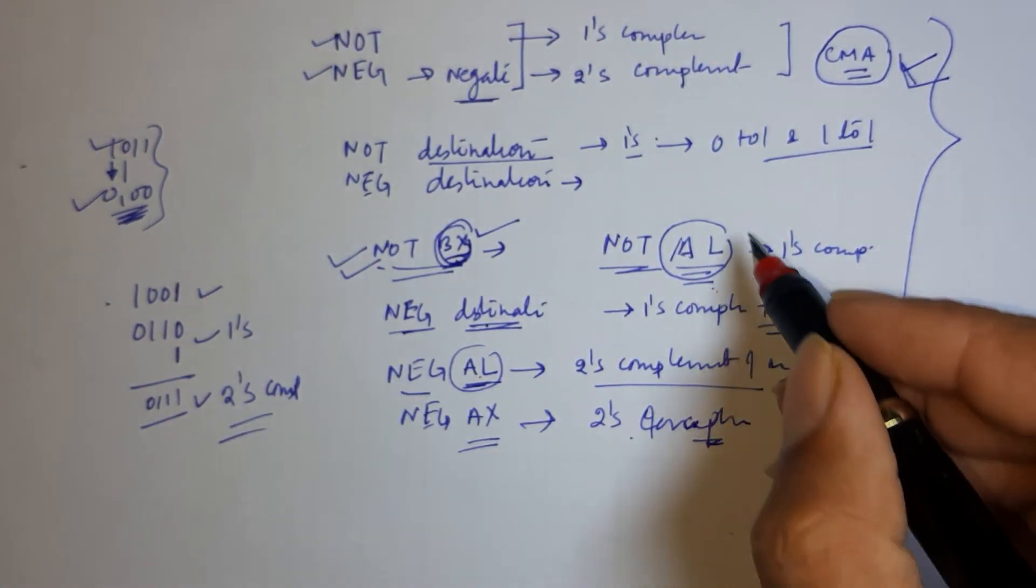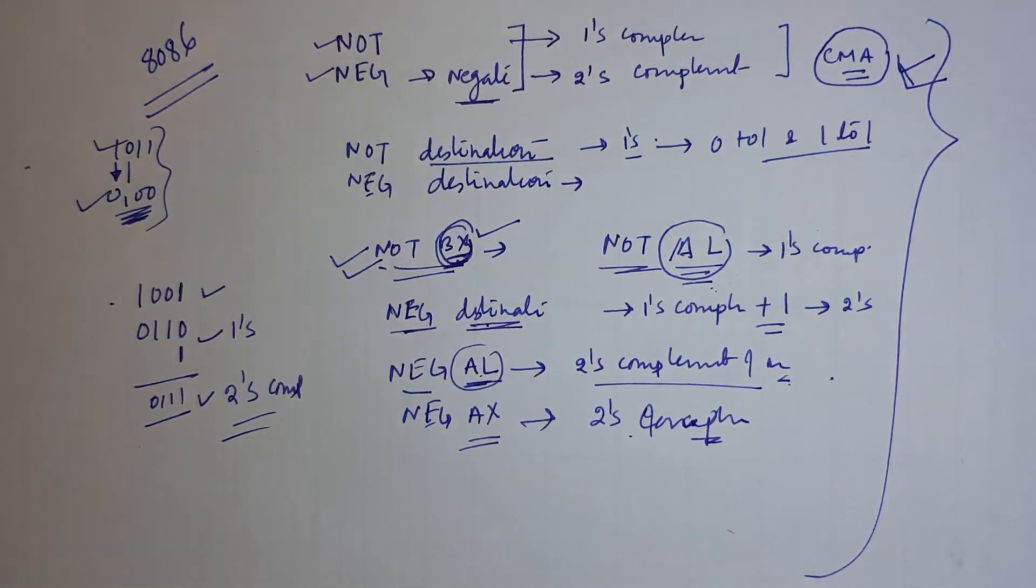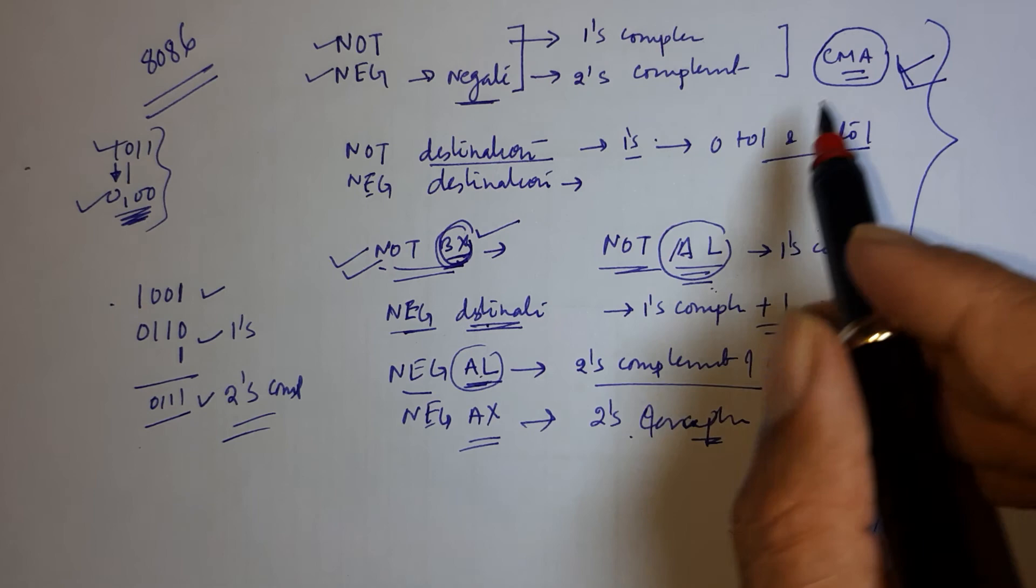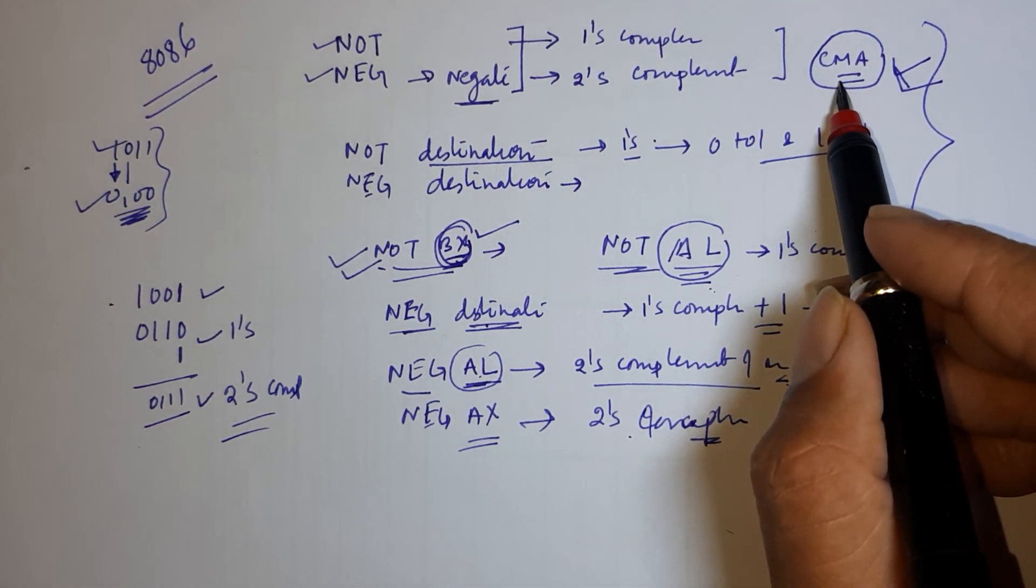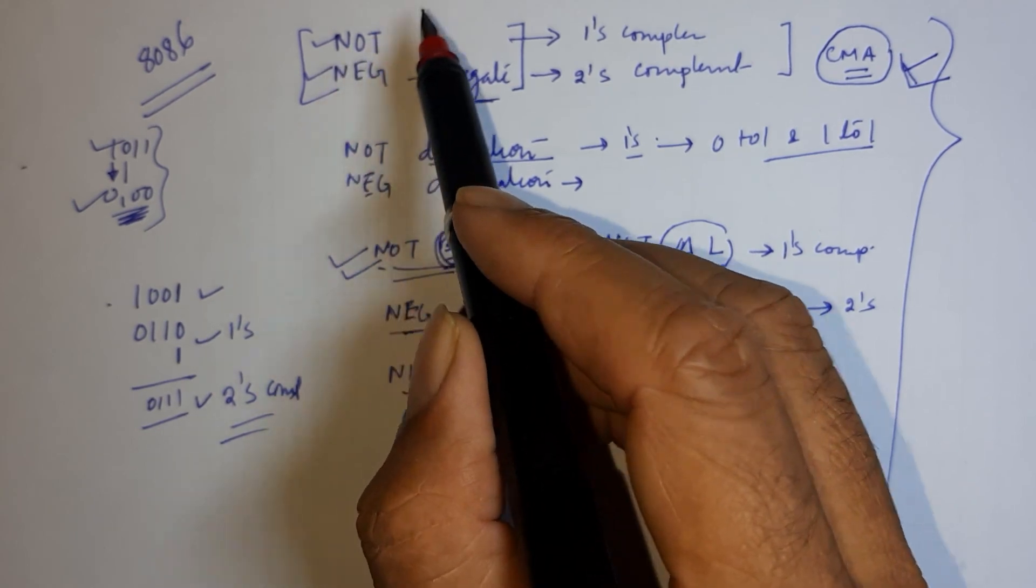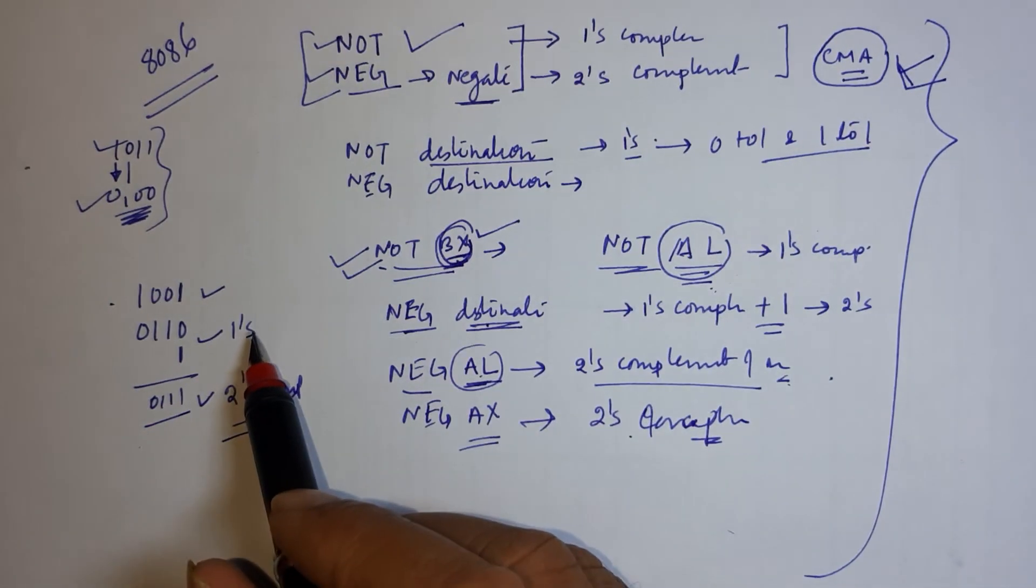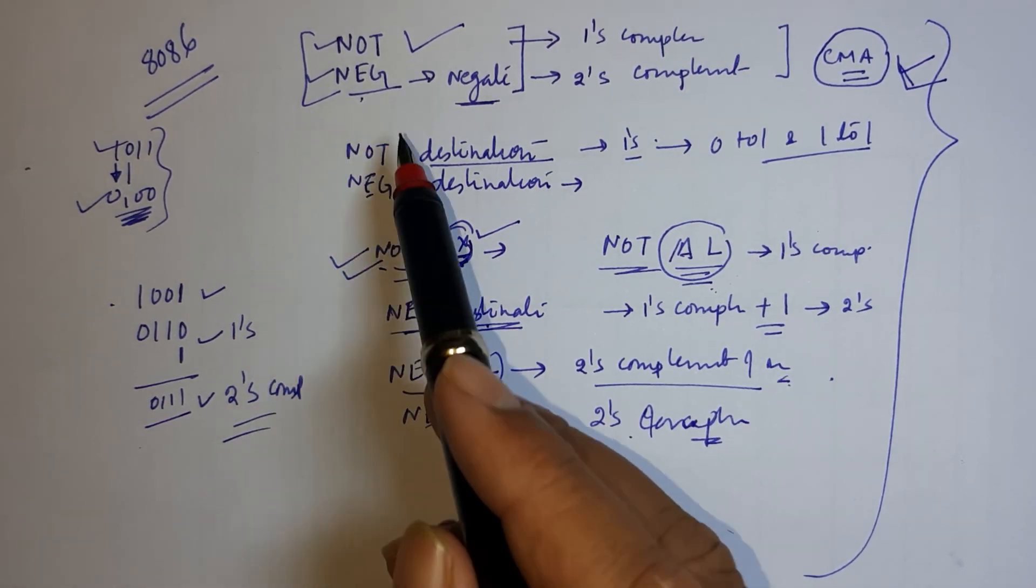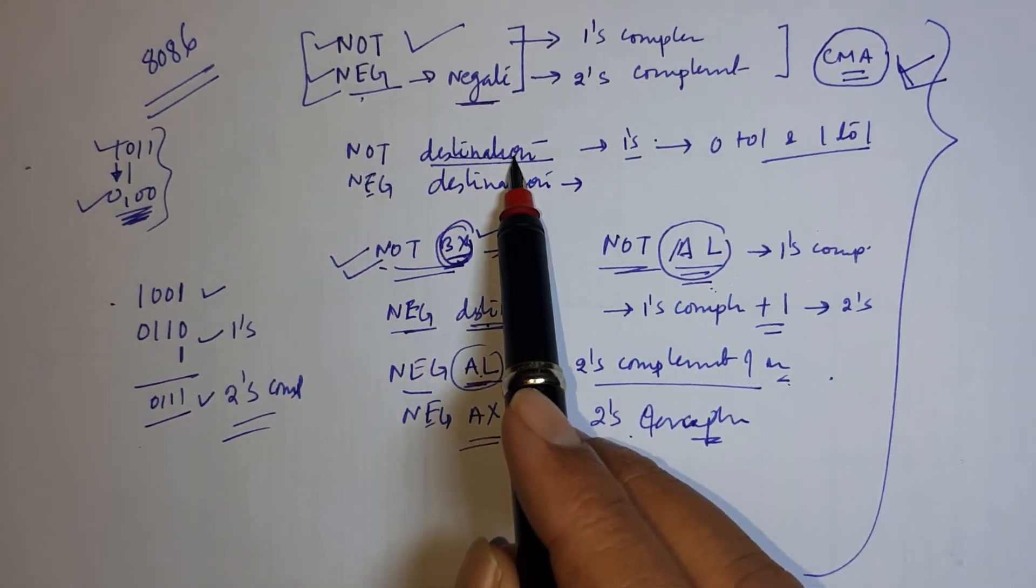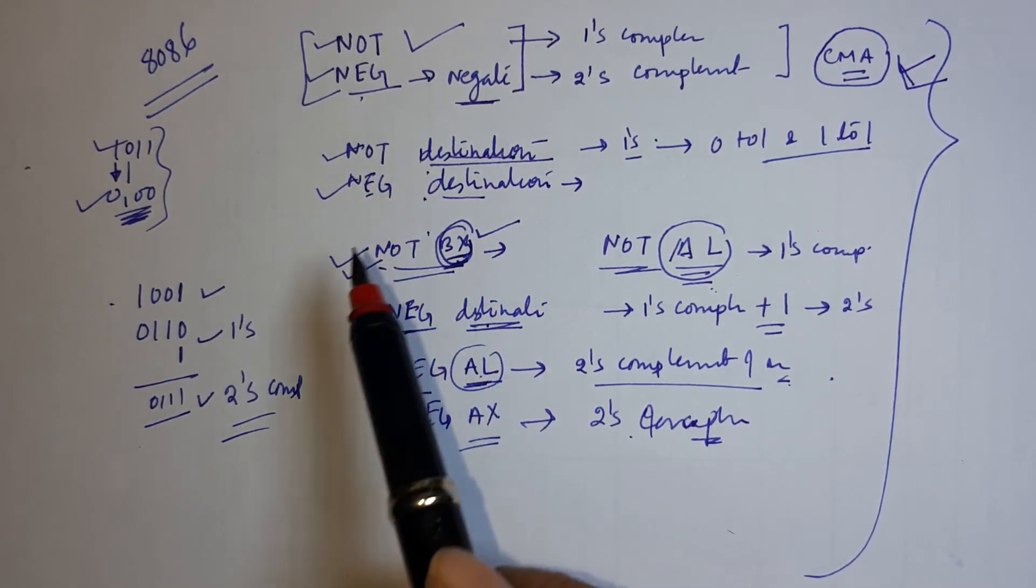So here we are talking about in concern of 8086 microprocessor. Because in 8085 we have CMA that is only applicable with the accumulator. But in case of 8086, we have NOT and NEG also. NOT for one's complement or NEG for two's complement. And whatever at position destination is given, this is going to work on that particular destination.